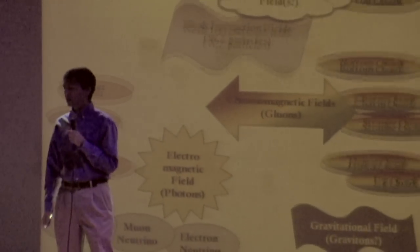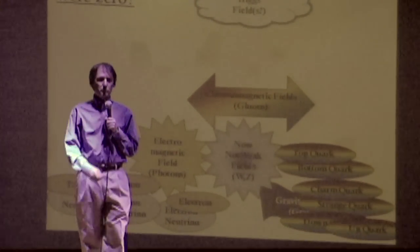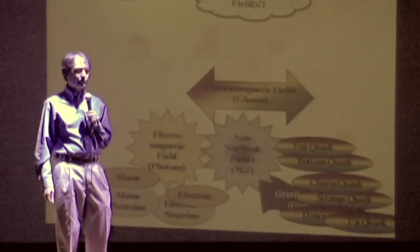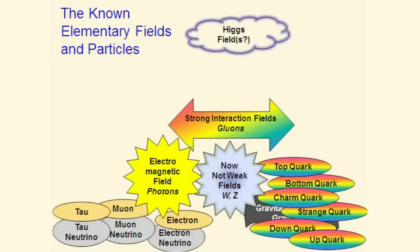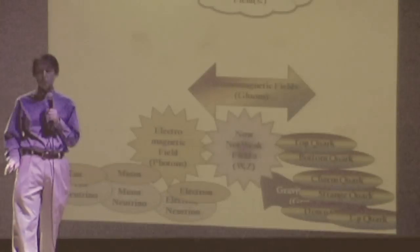If instead the Higgs field on average were zero, most of these particles would be massless or very light and in particular the electron would be massless and the weak interactions would no longer be weak. The weak nuclear interaction would now be a pretty strong interaction and this would totally change our world.